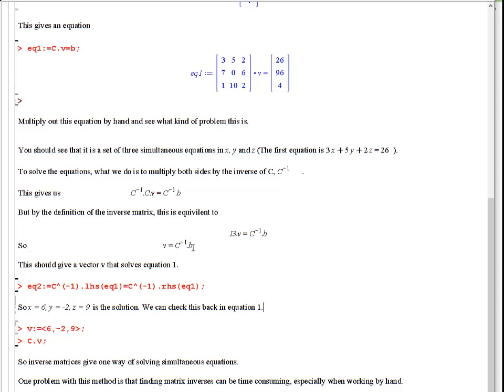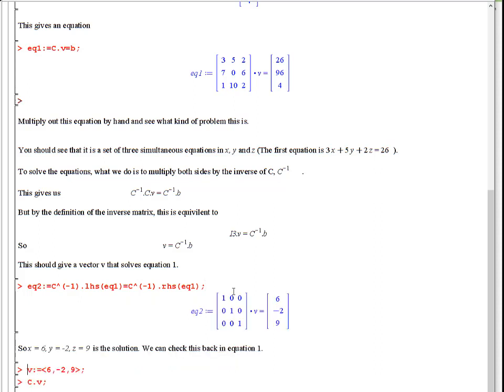So, if you calculate the right-hand side, you get straight away your answers for x, y, and z. So the identity matrix times v gives you 6 minus 2, 9, so x is 6, y is minus 2, and z is 9.